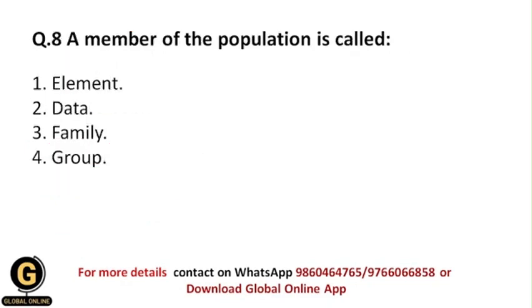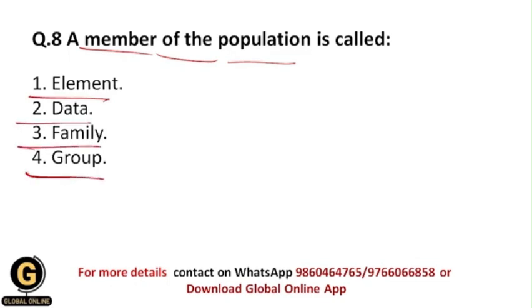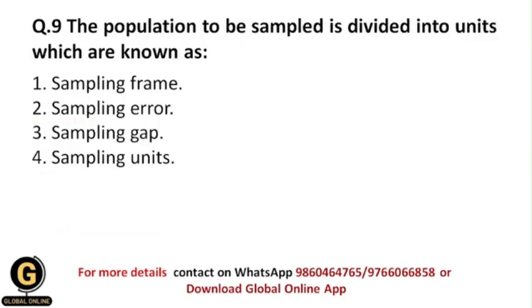A member of the population is called — element, data, family, or group? A particular member of the population is called a unit or element. So the correct answer is option 1.